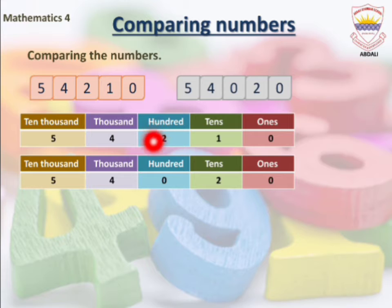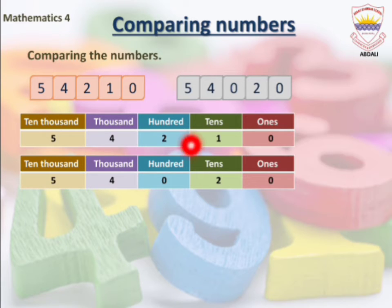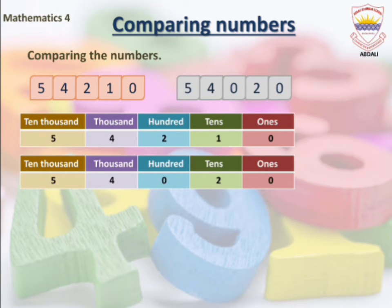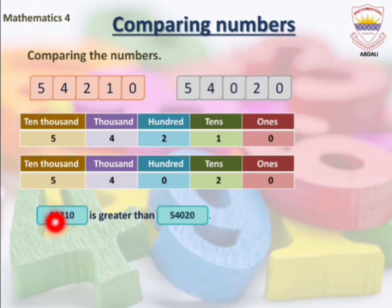We have to decide which digit is smaller and which is greater. Two is greater and zero is smaller. So the number with digit two in the hundreds place is greater, and the number with digit zero in the hundreds place is smaller.